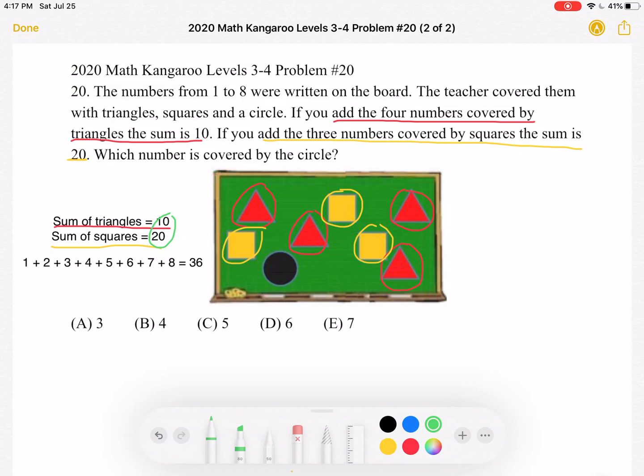Now we know that we're trying to find the number covered by the circle. And we also know that the numbers 1 to 8 were written on the board. So in order to find the number covered by the circle, we should take the total sum of all the numbers written on the board and then subtract the sum of the numbers that we know.